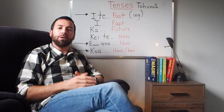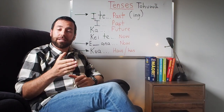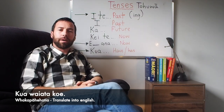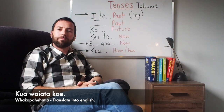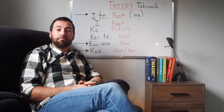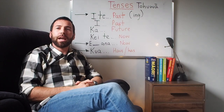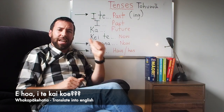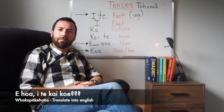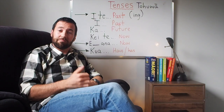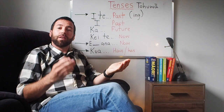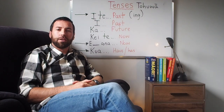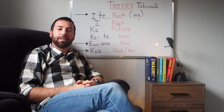Let's finish with a few examples — whakāpākehātia, translate these into English. Kua waiata koe. If you got 'you have sung', kāpai. Next, a pātai: e hoa, i te kai koe? — 'Mate, were you eating?' And finally: e kai ana koe? — 'Are you eating?' Present tense, e ana. Kāpai.